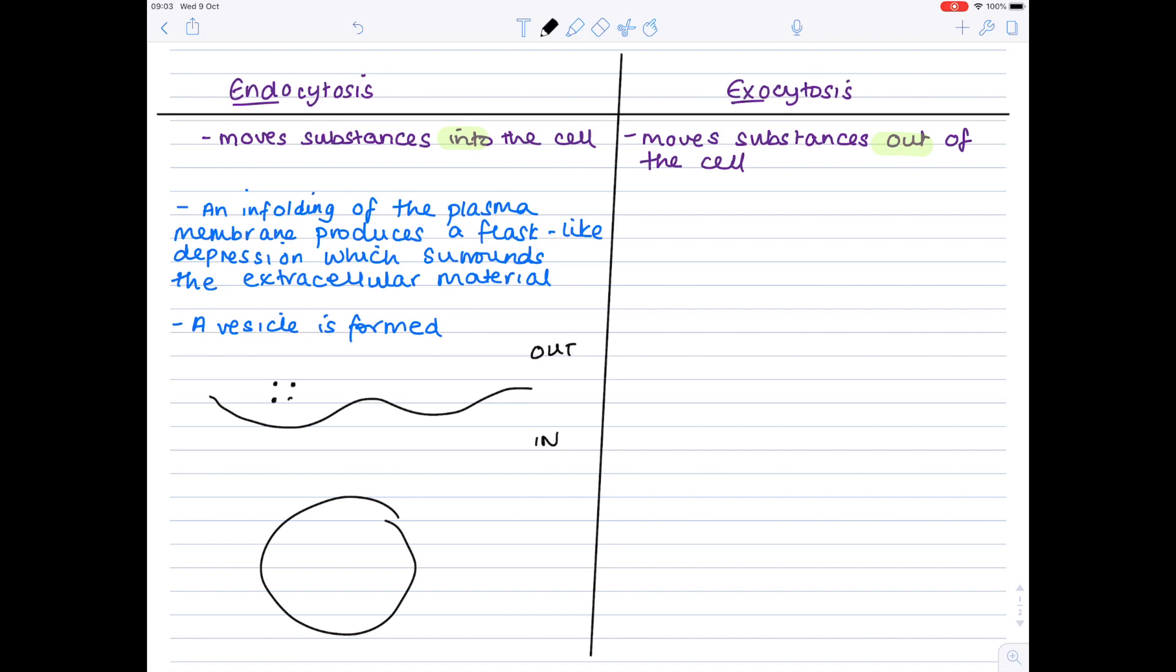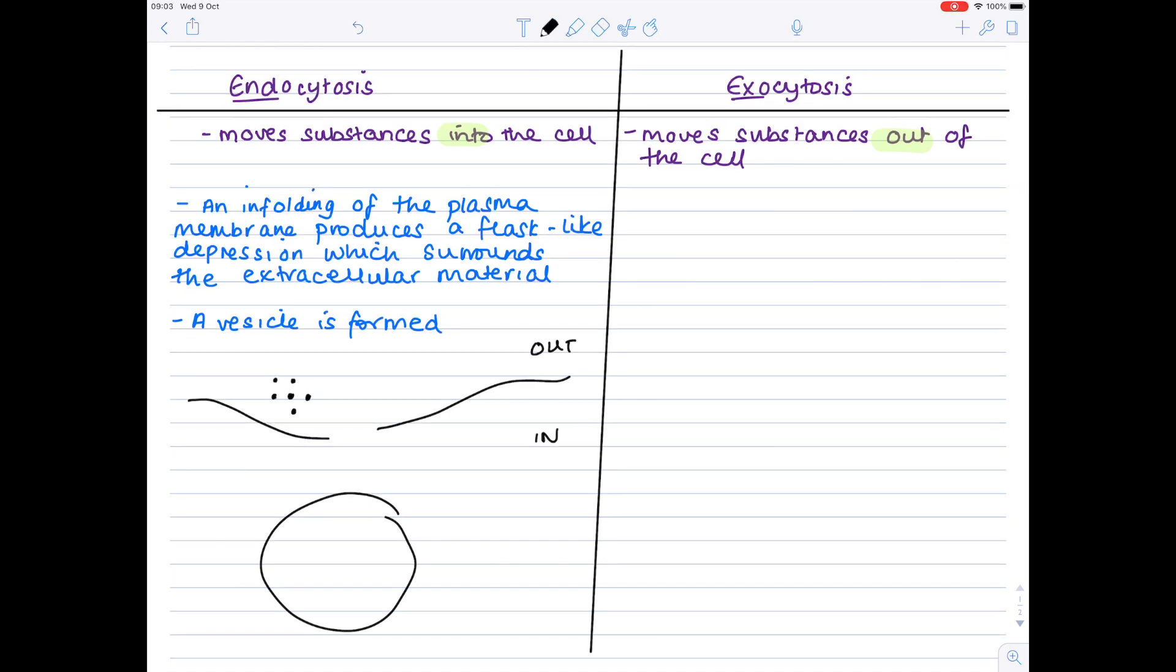Now, here's the large substances that you're trying to move into the cell. That cell surface membrane infolds a bit like this, allowing those substances to move into it. And then it breaks off to form a vesicle, so this bubble, which contains the extracellular material.